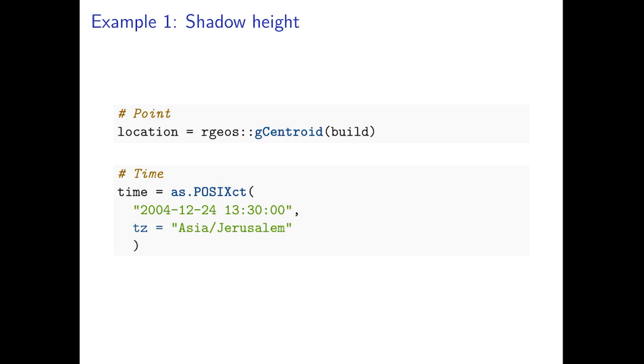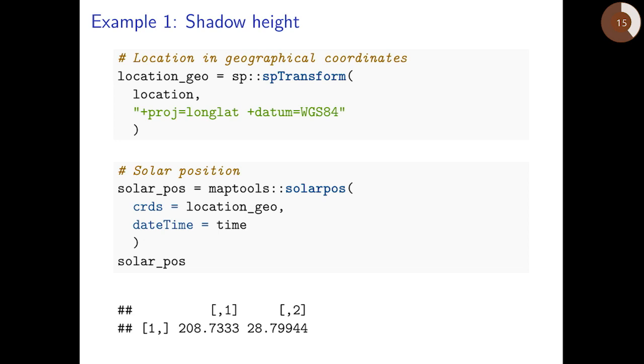Let us take one point in time, for example 24th of December 2004, 1:30 in the afternoon. First we need to determine sun position. To do that we need to know also the longitude and latitude of the queried location, which can be done for example with function spTransform.